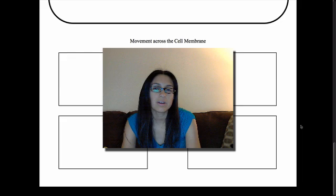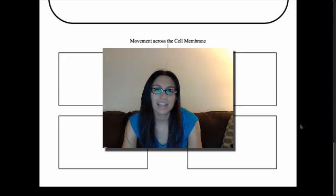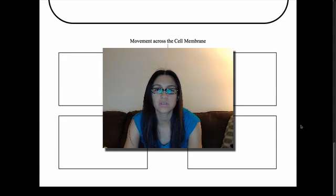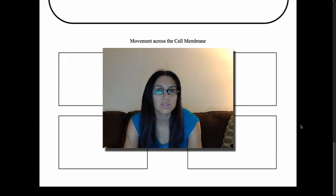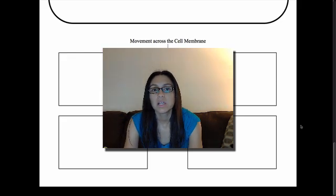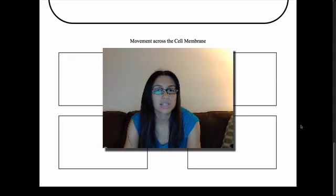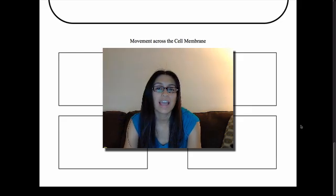Every single one of our cells is a living thing. We look at ourselves and consider ourselves one single individual, but in reality we're trillions of individuals all working together as one. Every single one of those trillions of individual cells needs oxygen and nutrients, and every single one produces waste.